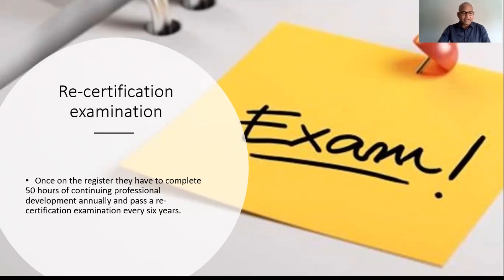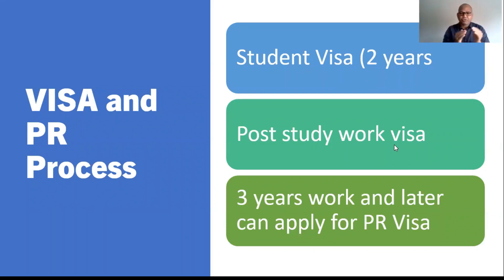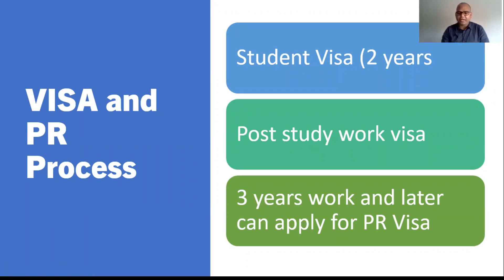Once registered, you must complete 50 hours of continuous professional education and then your license will be renewed. Regarding visas — when you study this course, you will get a two-year student visa. After completing your studies and passing the exam, you will get two additional years called the post-study working visa, so there is no need to get a sponsored visa from an employer.